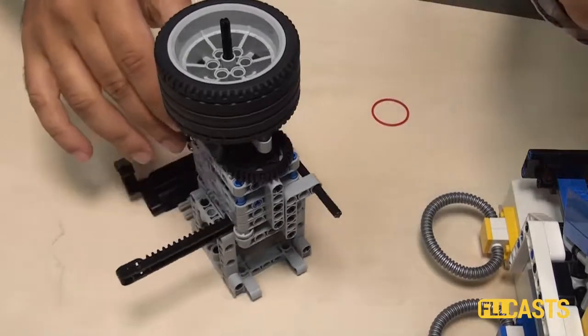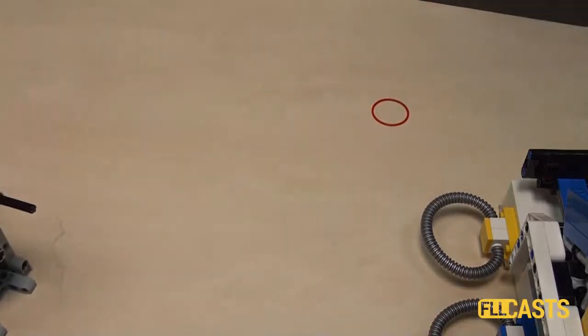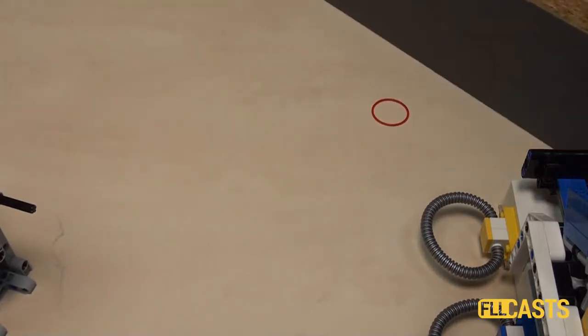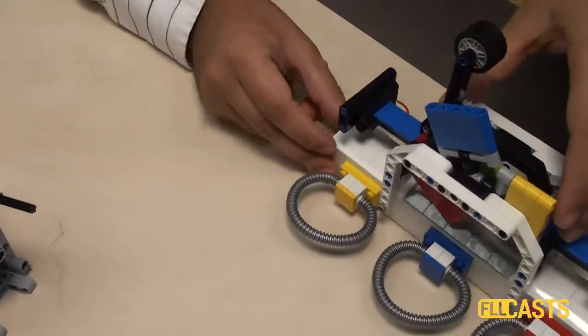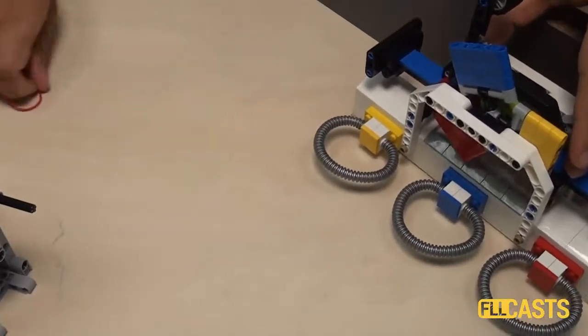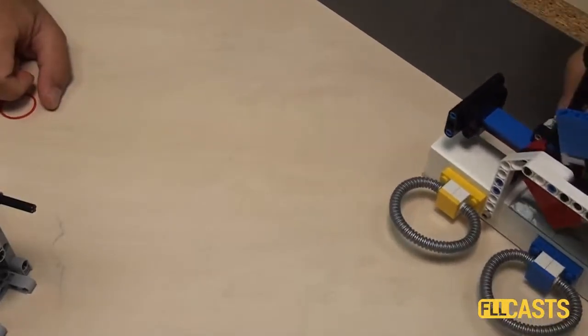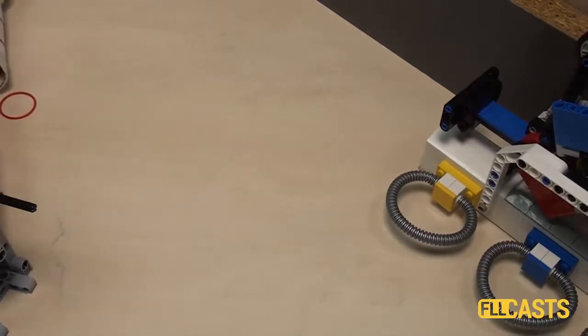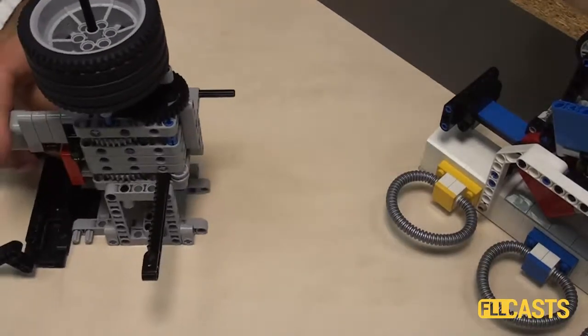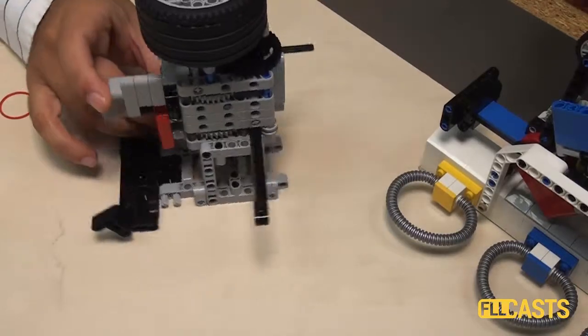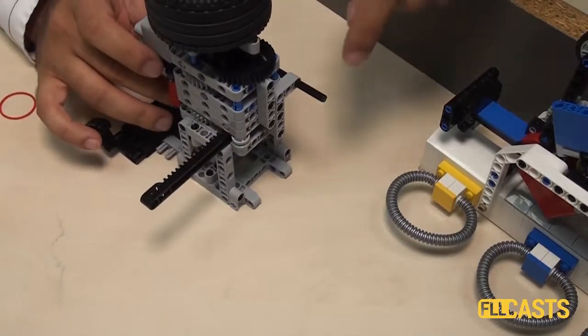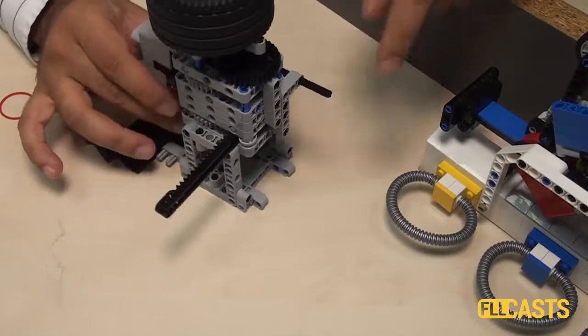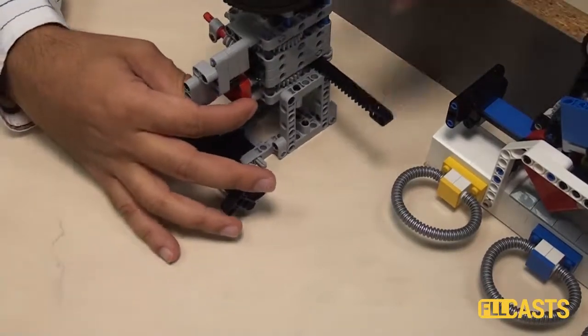Now when you are at the competition we have the border and this mission model was placed something like this very close to the border. So the idea is that we program the robot, the robot moves, it reaches the border and then by pushing the robot to the border we actually push this axle here.